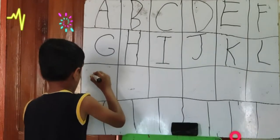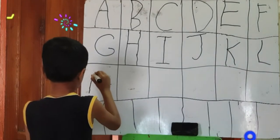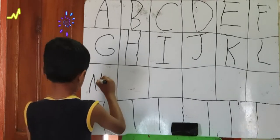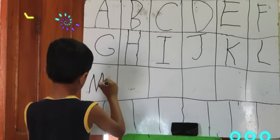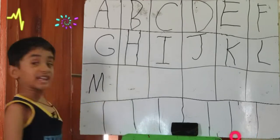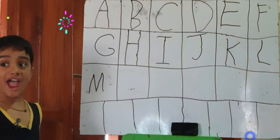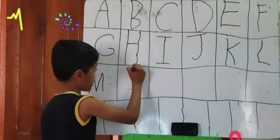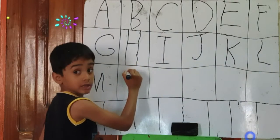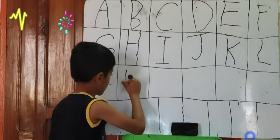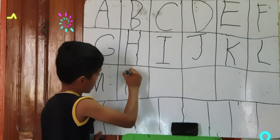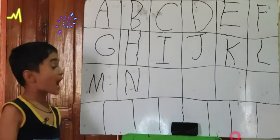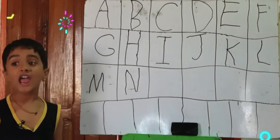Now we are going to learn M. One standing line, another standing line, another standing line. That makes N.